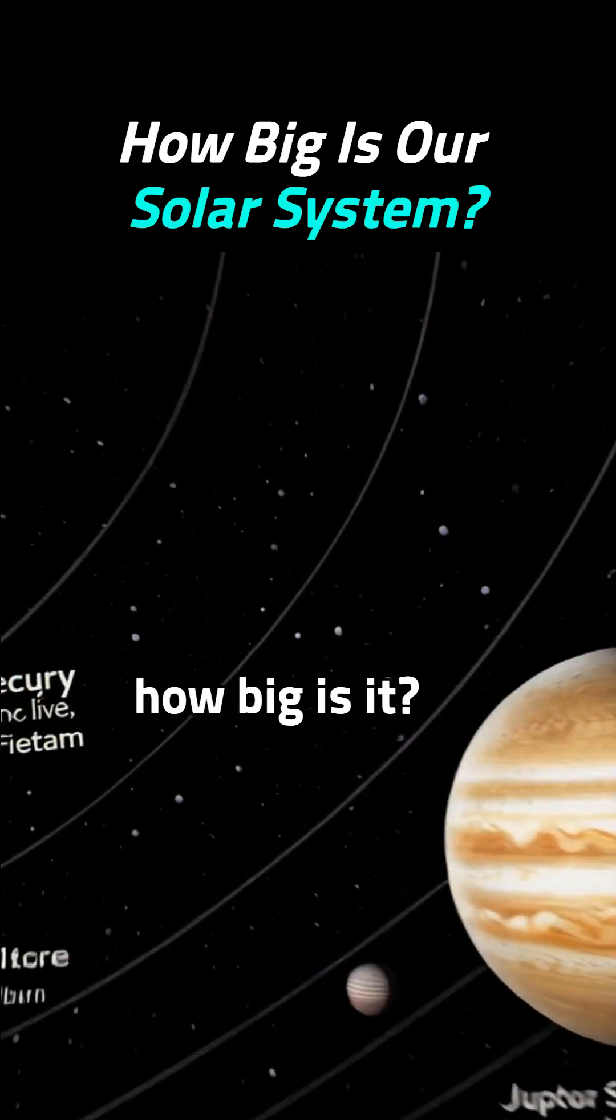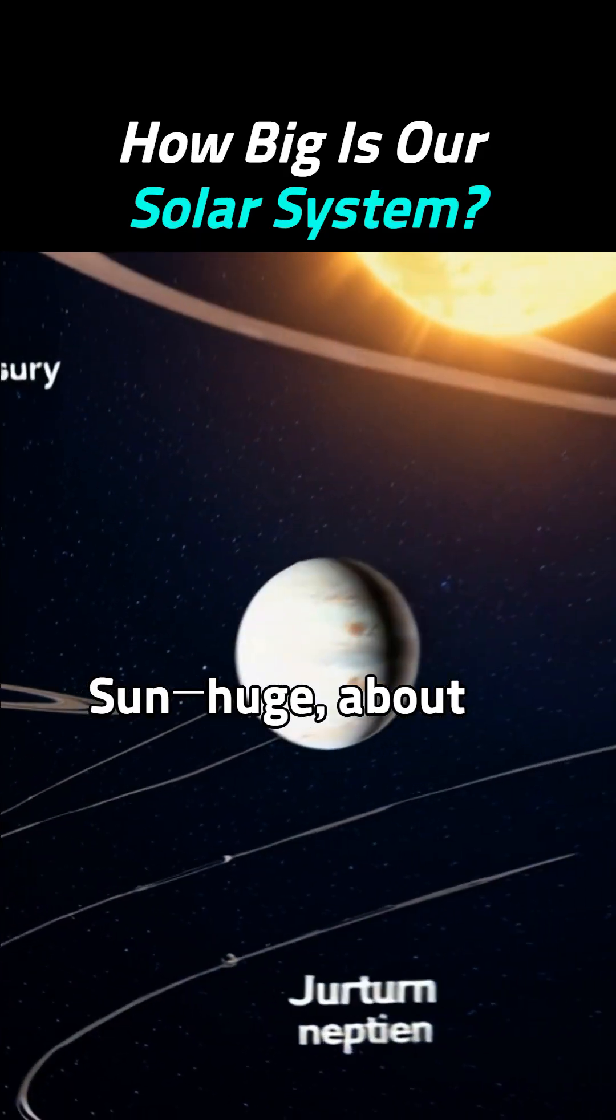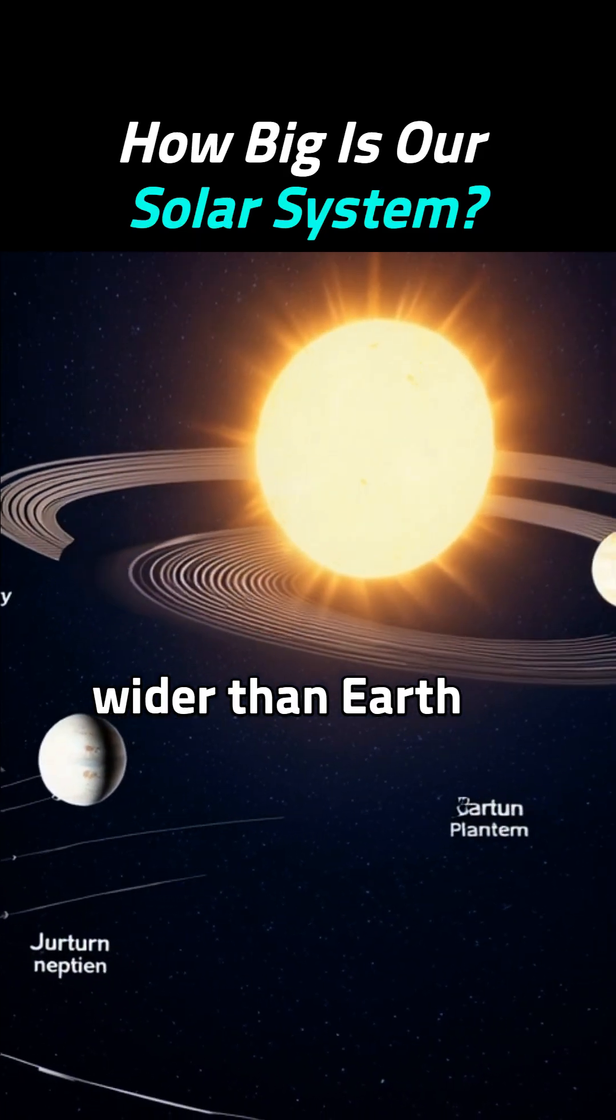We live in the solar system, but how big is it? Let's start with the Sun—huge, about 109 times wider than Earth.